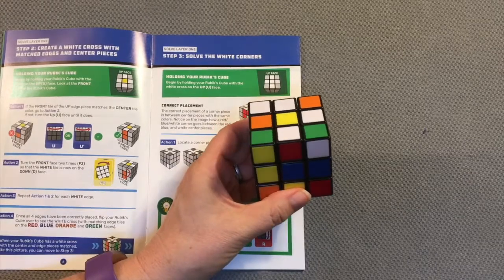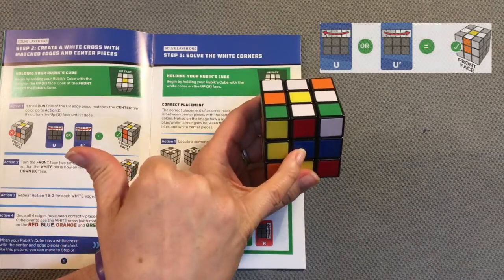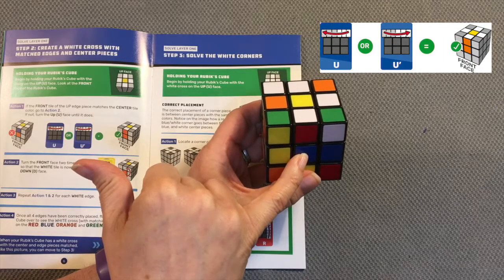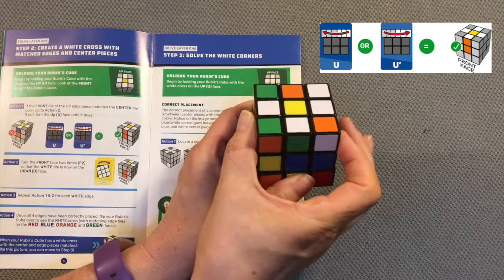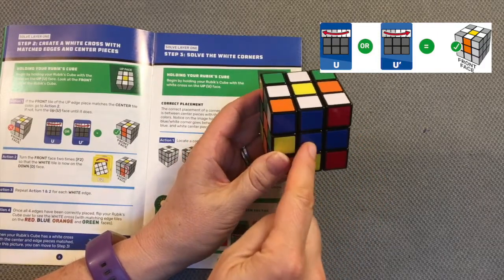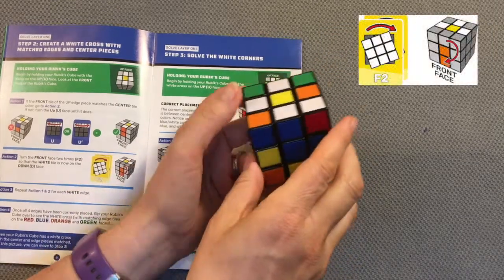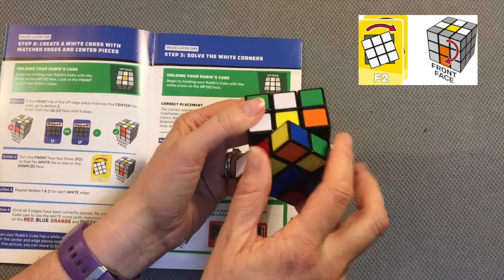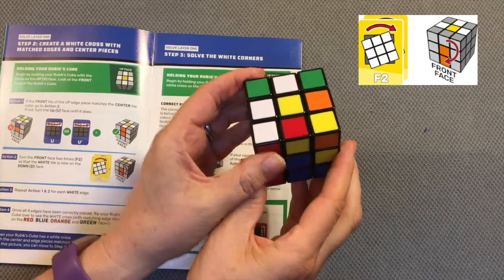Now I want to repeat that process for the remaining sides. I'm looking for the blue edge piece. I simply rotate my up face either to the left or to the right until I have a match between the edge piece and the centerpiece. I move to action 2, which is two turns to the right of my front face. Again, taking a peek, I'm building my white cross.